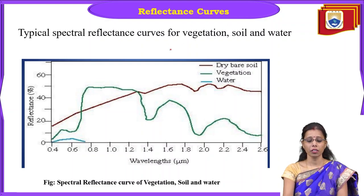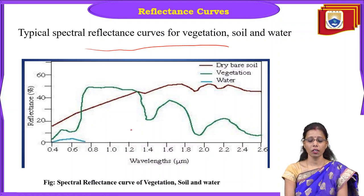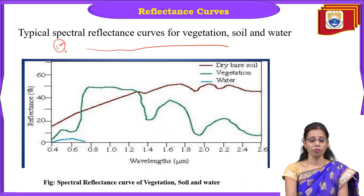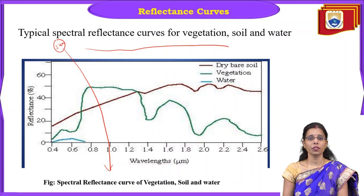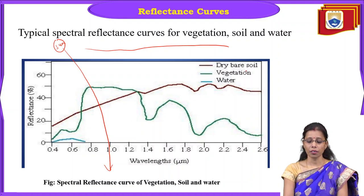Now here we have a typical spectral reflectance curve of vegetation, soil, and water. When the sun's energy passes through the atmosphere and electromagnetic spectrum and falls on the earth's surface, which region is highly reflected and which is absorbed depends on the water content and organic content present. We have three types of features here: dry bare soil, vegetation, and water.